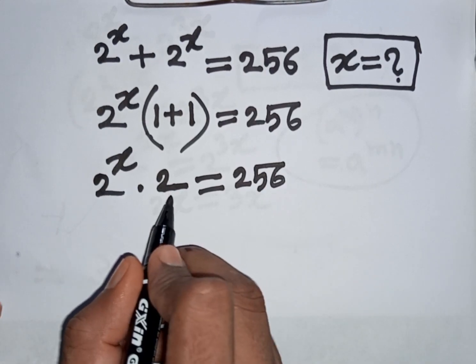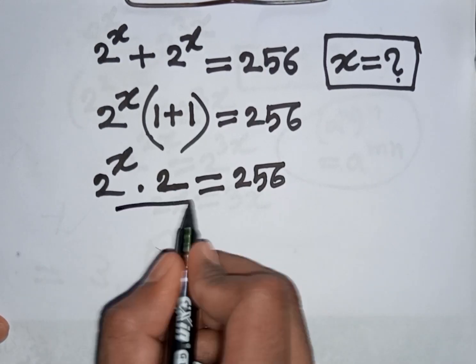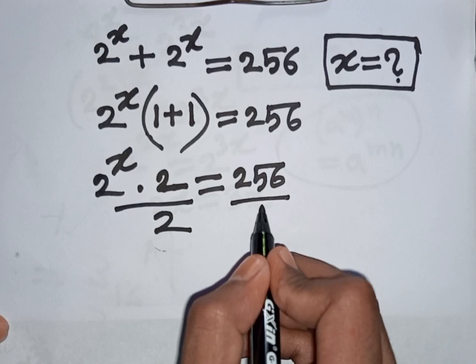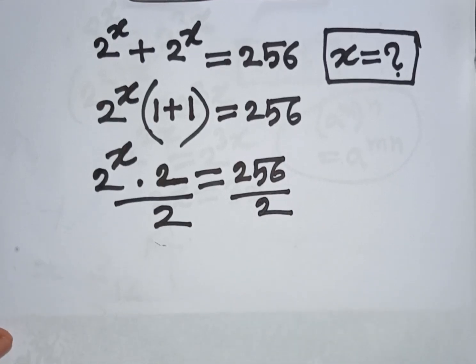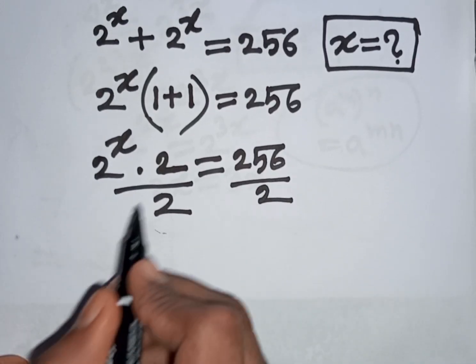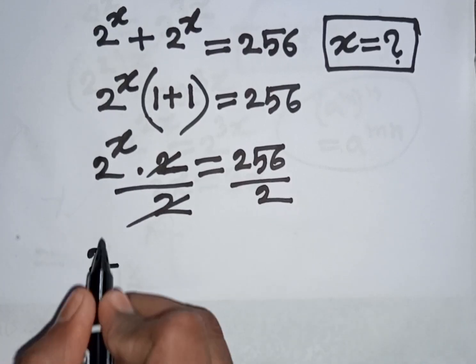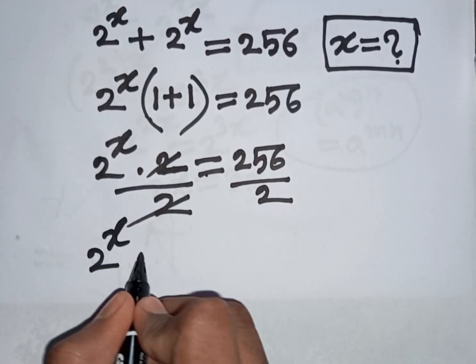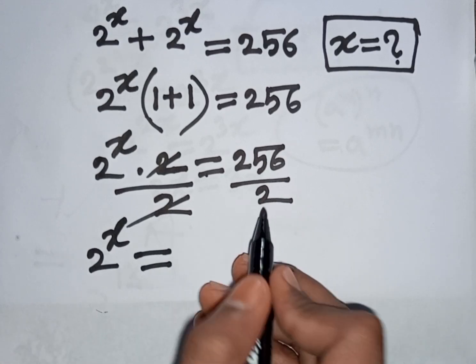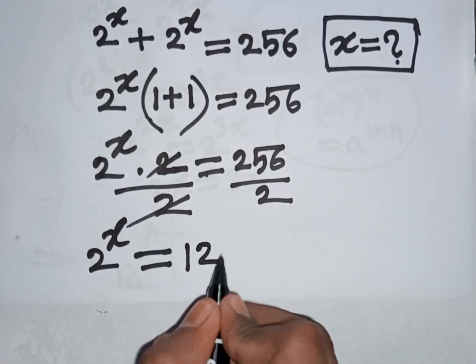Now we divide it by 2 on both sides. So divide it by 2, divide it by 2. Now we see this, this will be cancelled. So here 2 power x is equal to this divided by this, that means 128.